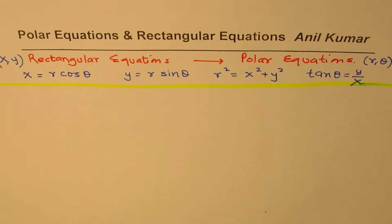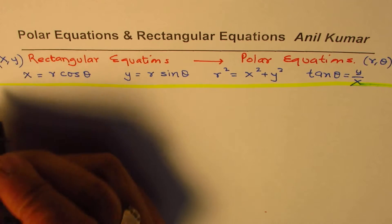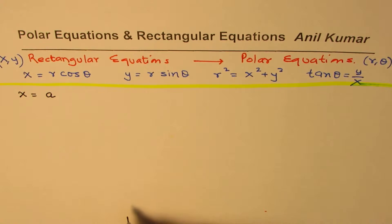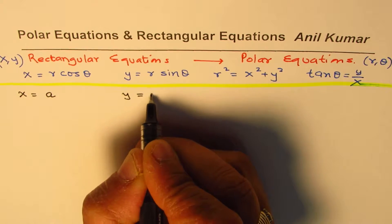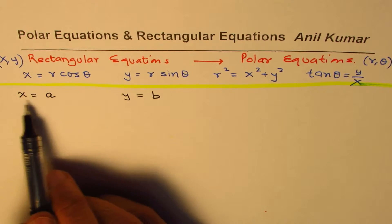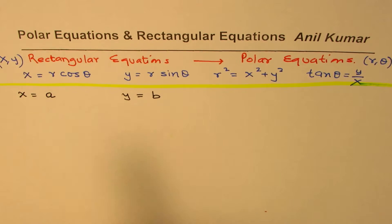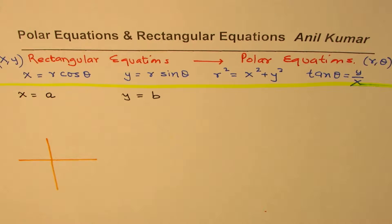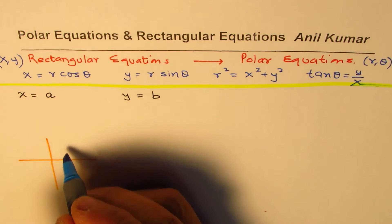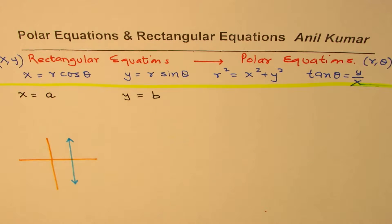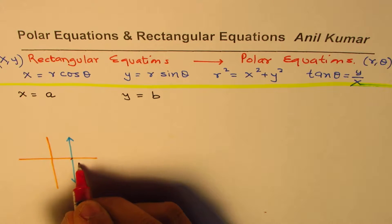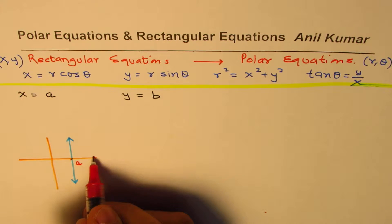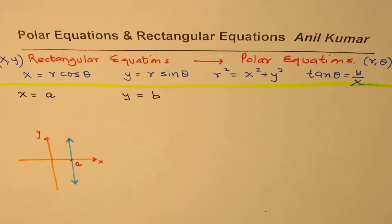Let's begin with a few very simple examples. Let's say we have a line x equals to a, or y equals to b. x equals to a represents a straight line which is vertical in nature. Let me sketch these lines — in the rectangular system we get a vertical line where each and every point has x equals to a.